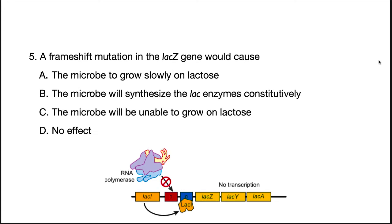Okay, let's go back and explain those. The first one says a frameshift in LACZ mutation would cause what? A microbe would be unable to grow on lactose is the correct answer. That's C. A frameshift mutation would absolutely inactivate LACZ, which is beta-galactosidase. This is the enzyme that's actually responsible for splitting lactose into glucose and galactose. Without this activity, the bacterium would not be able to grow on lactose.